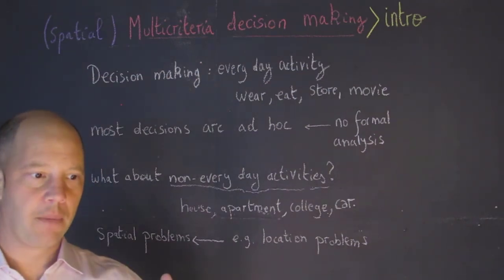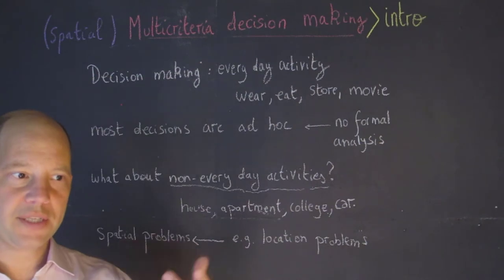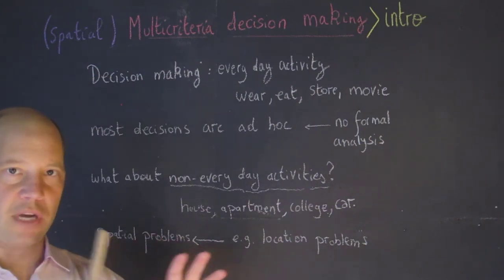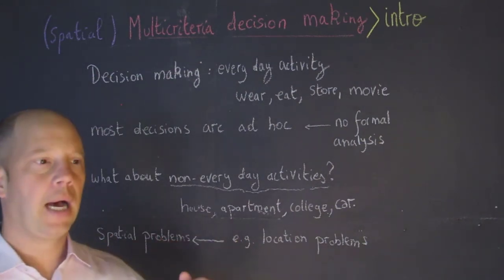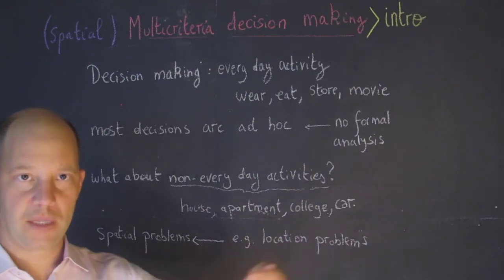Where to locate maybe a new school. Those decisions typically have also different attributes or constraints and they may involve more than one decision maker.